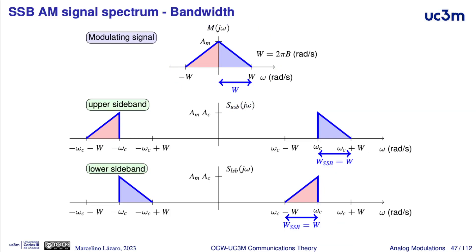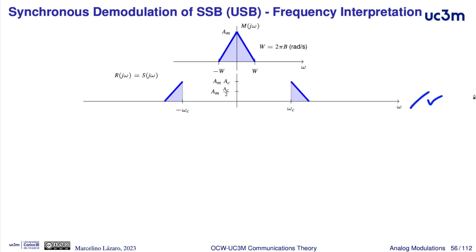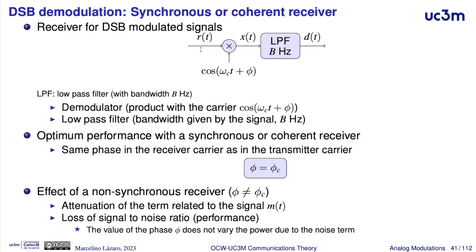It is important to remember that in a single sideband, there is all the necessary information to recover the modulating signal at the receiver. The recovery is made by using a coherent or synchronous receiver. Here, we will see in the frequency domain a visual example of the behavior of this kind of receiver. This is the frequency response of a modulating signal with bandwidth W radians per second. We generate the upper sideband modulated signal, and in the coherent receiver, the received signal is multiplied with a cosine and then passed through a low pass filter.